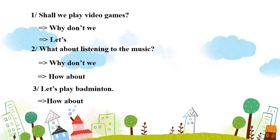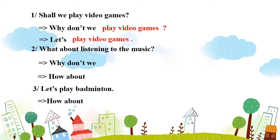Bây giờ chúng ta sẽ làm bài tập về mẫu câu vừa rồi nhé. Ở đây có 3 câu, các em lấy bút ra làm, sau đó cô sẽ sửa đáp án nhé. Câu thứ nhất: "Say we play video games." – Chúng ta sẽ chơi game. Viết lại: "Why don't we play video games?" – Sao chúng ta không chơi game? Hoặc "Let's play video games." – Chúng ta hãy chơi game.